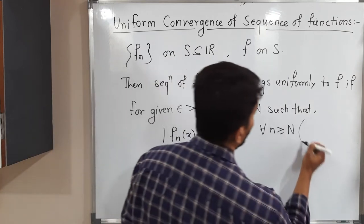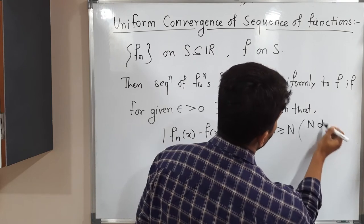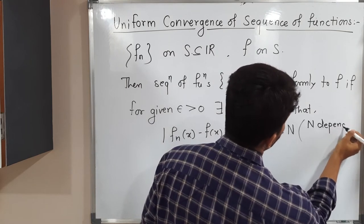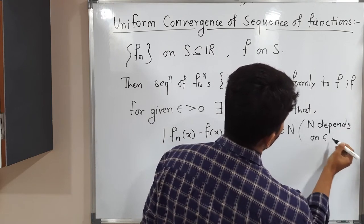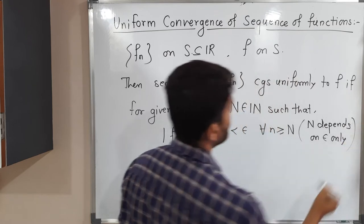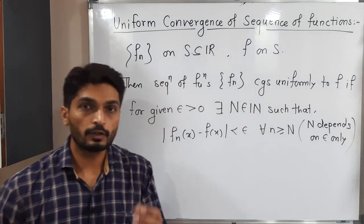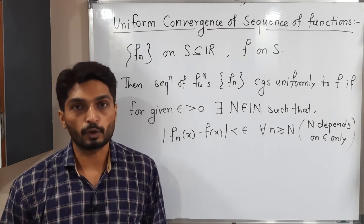So here I should mention: N depends on epsilon only. This is a major difference between the definition of point-wise convergence and uniform convergence.